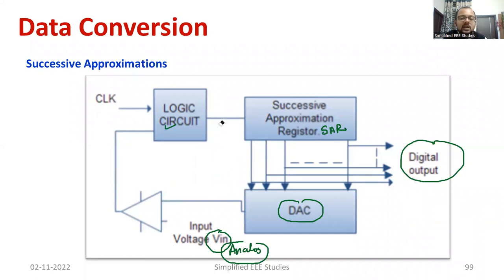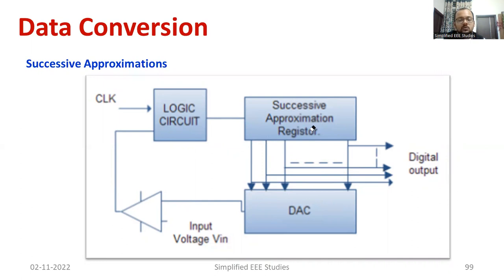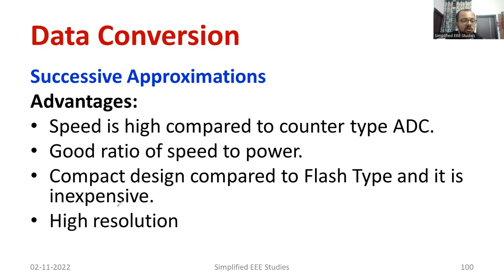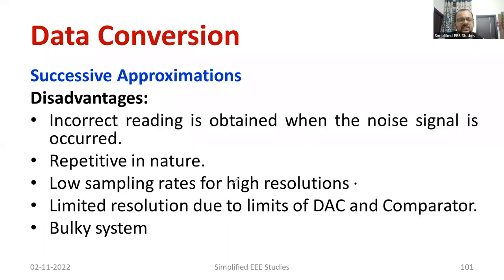Now let us check the advantages and disadvantages of successive approximation type data conversion. The first advantage is that speed is high compared to counter-type ADC. Also, it has a good ratio of speed to power, giving superior performance. The design is compact and it provides high resolution. These are the major advantages of the successive approximation technique. It is a continuous process.